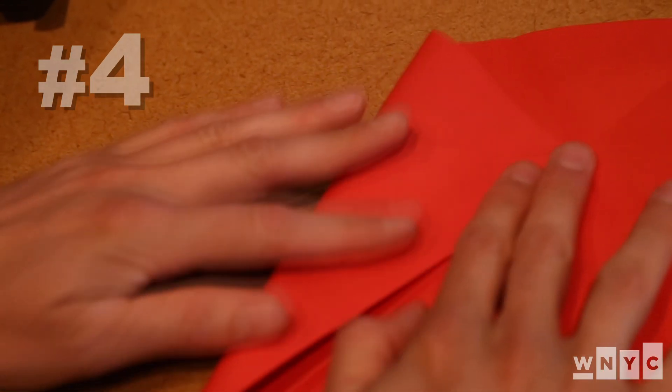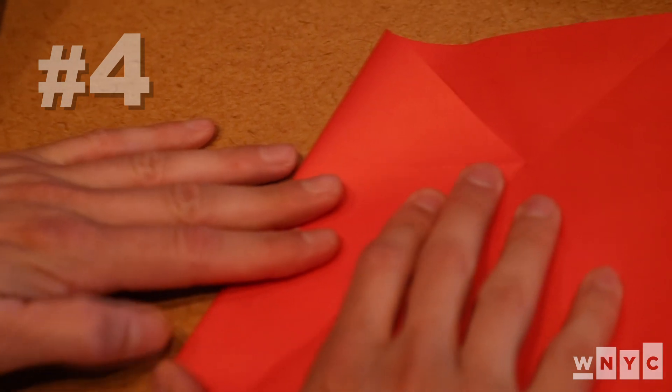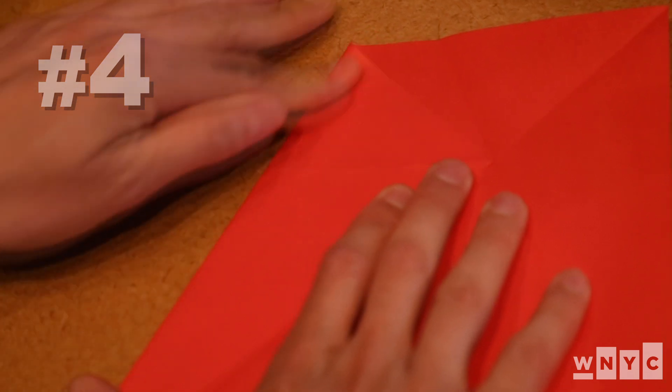And now again do the same thing on the opposite side. Take the left hand side of the paper and fold it over so that it lines up with the crease made from fold number two.